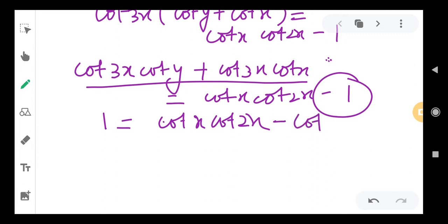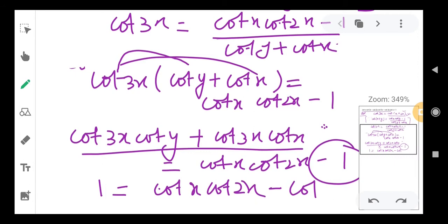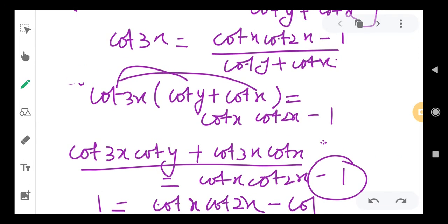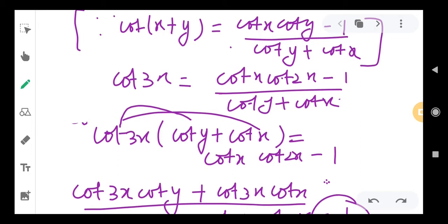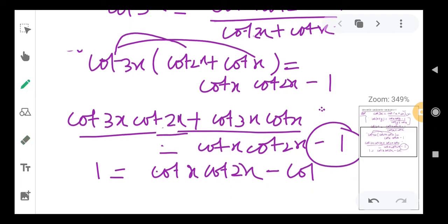So I am using the cot(x + y) formula, but instead of y we need to write 2x. Okay? So here it is 2x, and again because I use the formula, it's 2x here and also 2x instead of y.